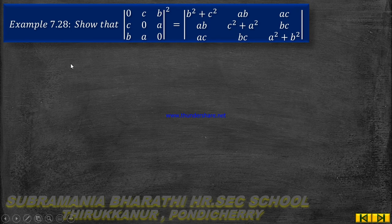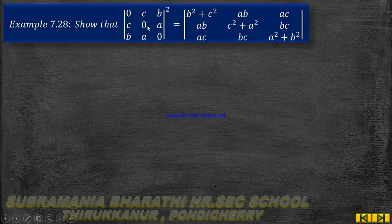11th standard, Chapter 7, Example 7.28. Show that determinant of the matrix with entries 0, C, B; C, 0, A; B, A, 0 — whole squared — is equal to...